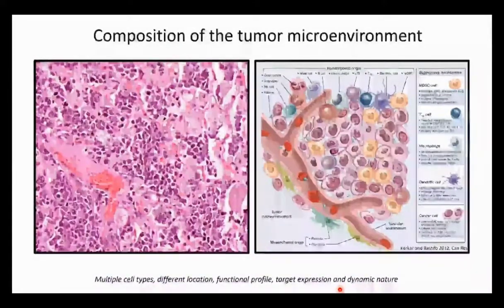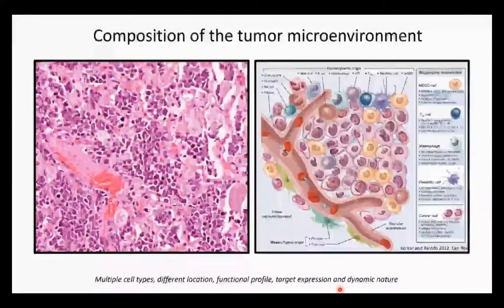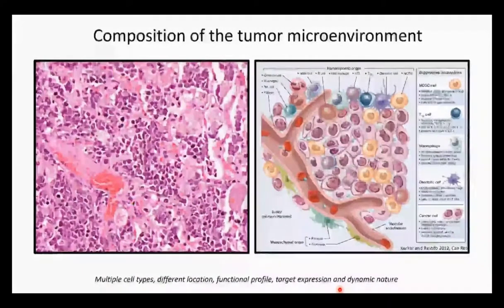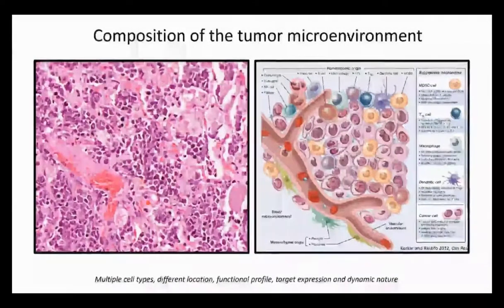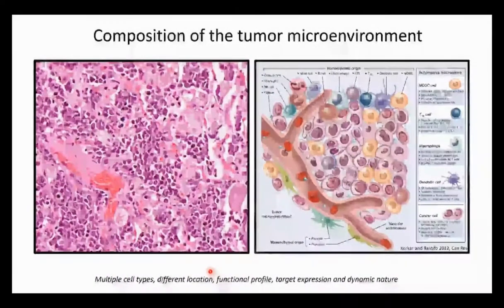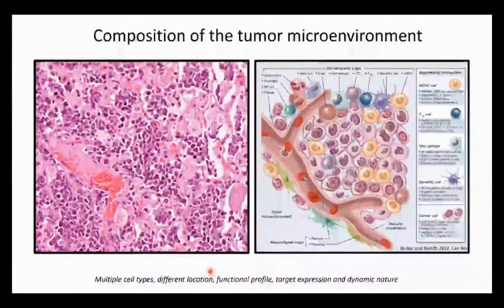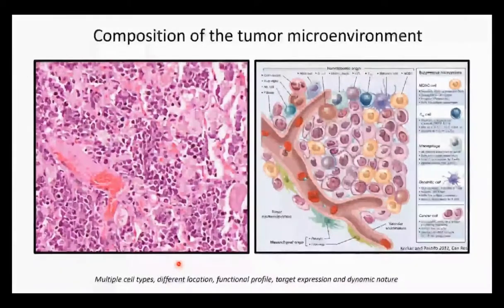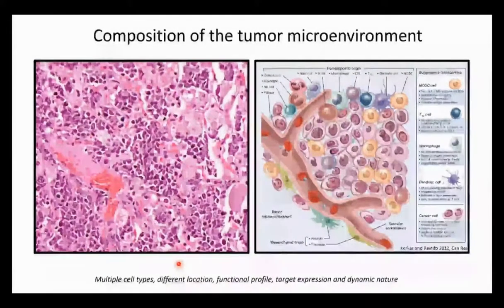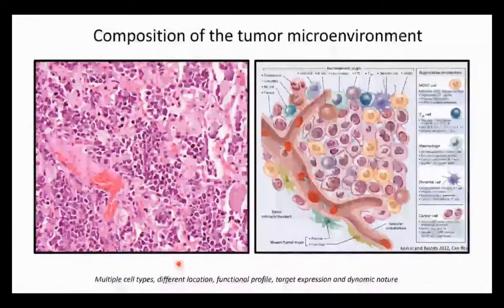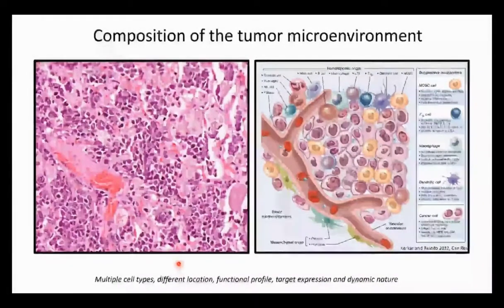Another important concept is to try to decipher what is the role and regulation of the tumor microenvironment. As you can see here from a real lung cancer picture using hematoxylin and eosin and a cartoon on the right, the tumor microenvironment is a very complex place composed of multiple structures and cell types arranged in very particular manners. It changes a lot between patients across tumors before and after treatment, making it a dynamic and difficult place to study, and it is where most of the tumor-immune interaction happens.